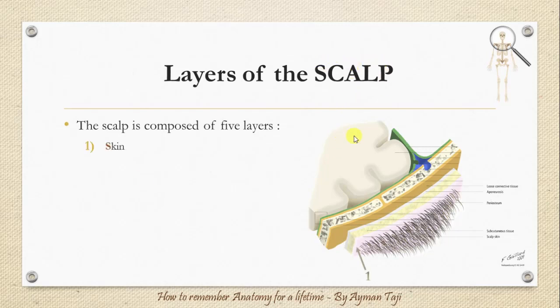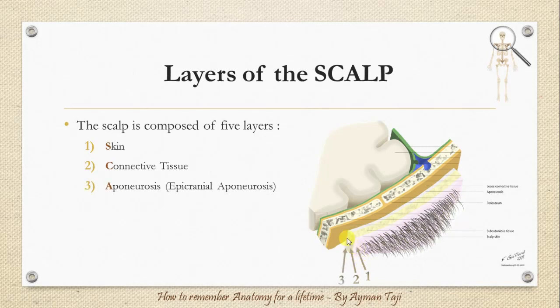First, there is the skin, then the connective tissue, then the aponeurosis — or epicranial aponeurosis — which is a tough layer of dense fibrous tissue.